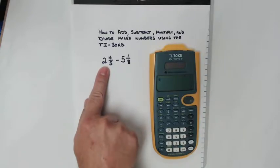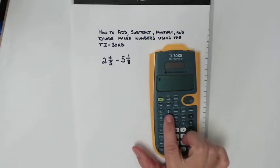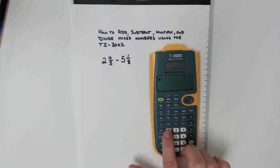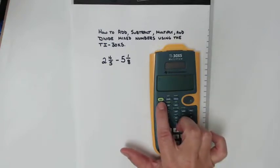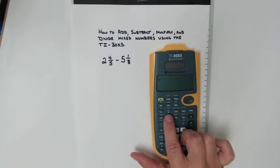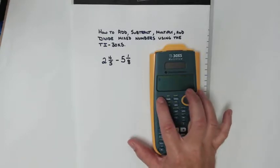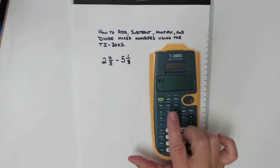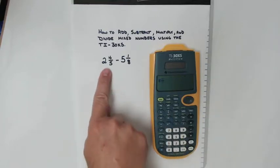To create a mixed number you need to use this green part right here. To access any of these green functions you need to use the second key. So right above your fraction button is the green button to create a mixed number. So let's hit second, hit the fraction button, now we're ready to create a mixed number.